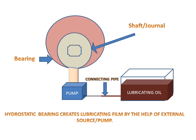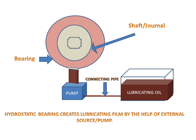Oil will come from the lubricating oil source and it will pump through the pipe, and the shaft will go upward by the external field of action. The oil is supplied through this pipe, the pump will pump the oil, and the shaft will move in the upward direction. So a gap is maintained between the bearing and journal.